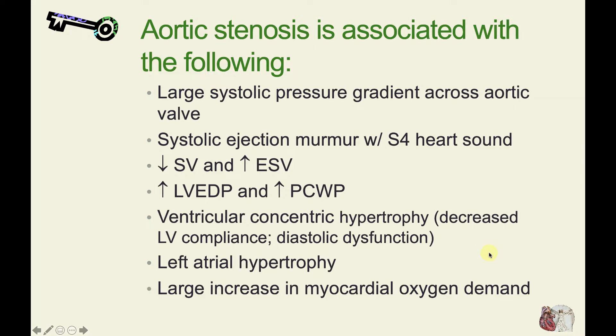To summarize what we've seen regarding aortic stenosis: it is associated with a large systolic pressure gradient across the aortic valve, a systolic ejection murmur, and an S4 sound because of the stiff ventricle. When the atria contract during the first phase of the cardiac cycle, this can set up vibrations within the stiff left ventricle and lead to what we call the fourth heart sound.